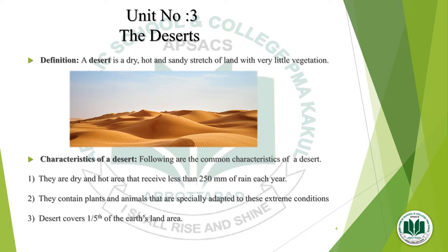Characteristics of the deserts are as follows. They are dry and hot areas that receive less than 250 mm of rain each year. They contain plants and animals that are specially adapted to these extreme conditions. Deserts cover one-fifth of the earth's land area. Here you can see the picture of a desert as well.